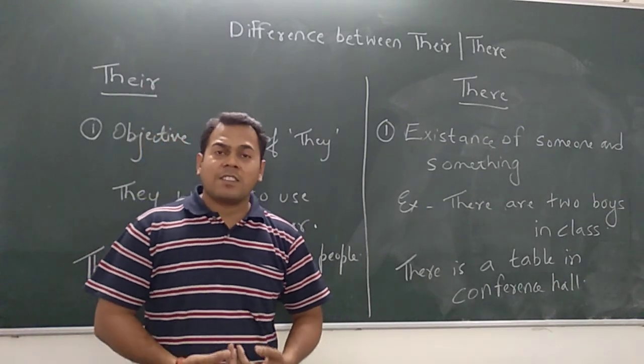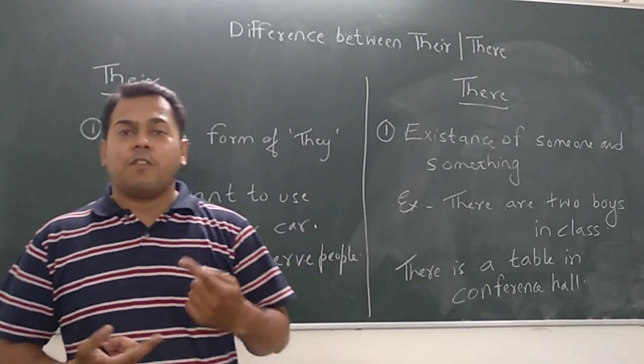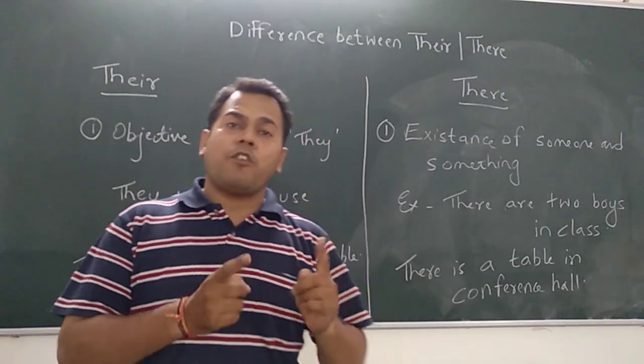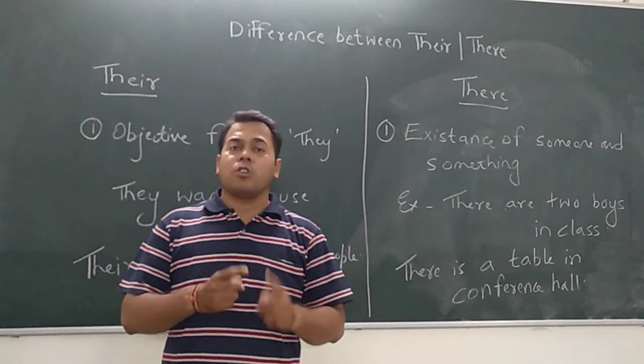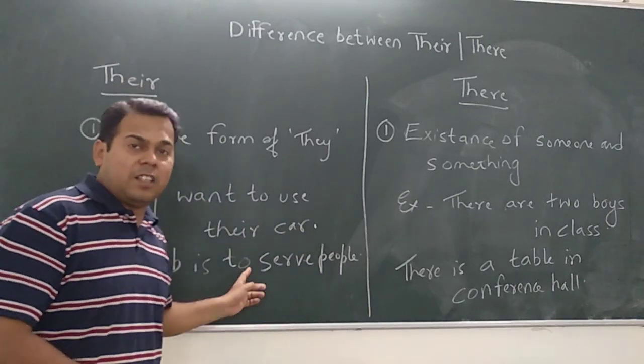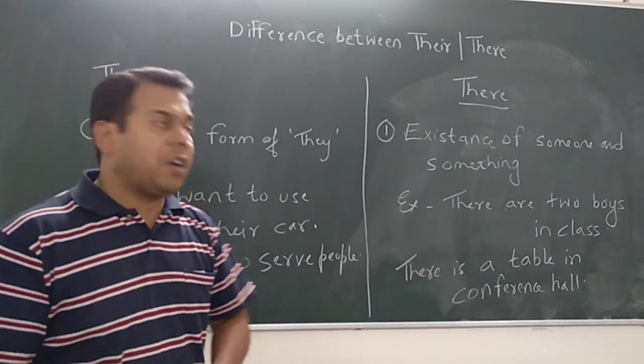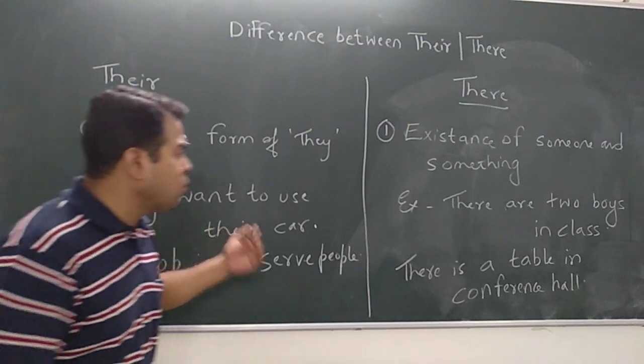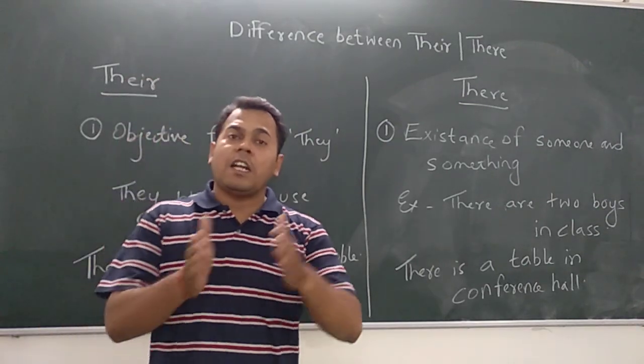Let me revise once more friends. T-H-E-I-R there is an objective form of they which can be used to show some object or for reference, like that is their job to serve people. You can see they want to use their car.